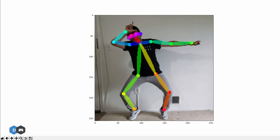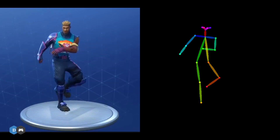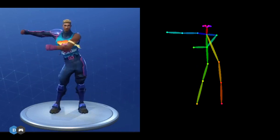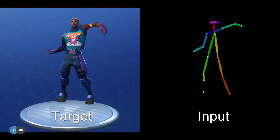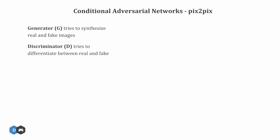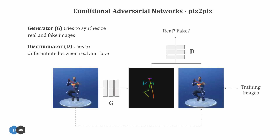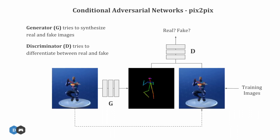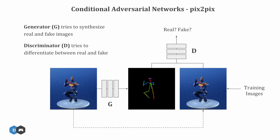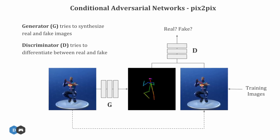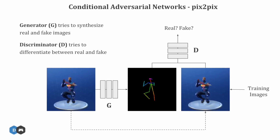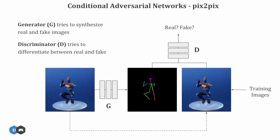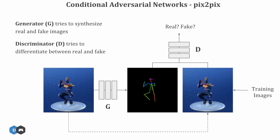Once we get the stick figure, we need to convert it into the Fortnite character. We use the same pose estimation algorithm to generate our training data, where the pose figure is the input and the Fortnite character is the target label. A Pix2Pix network is then trained to translate the input to the output. It uses a generative adversarial network for producing the target image conditioned on the input image rather than on random noise. Both input and target images are available to the generator and discriminator networks during training.